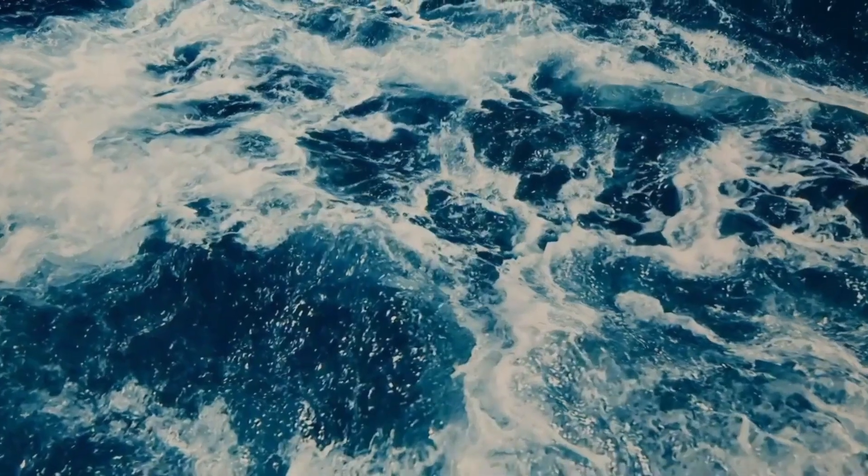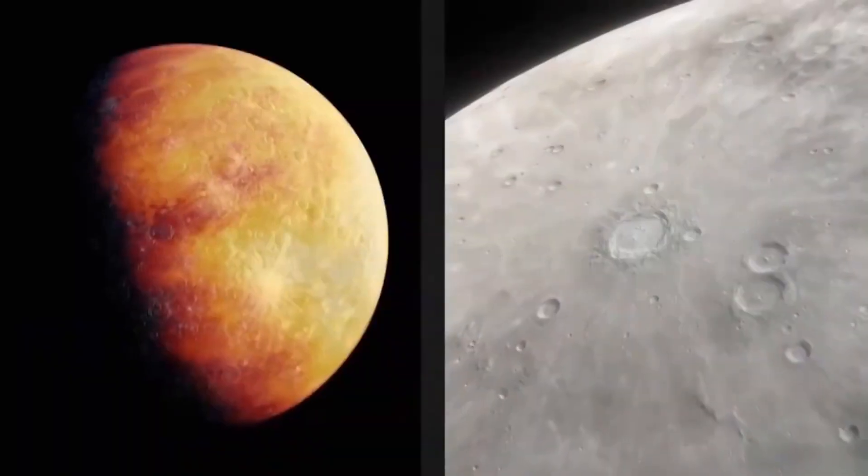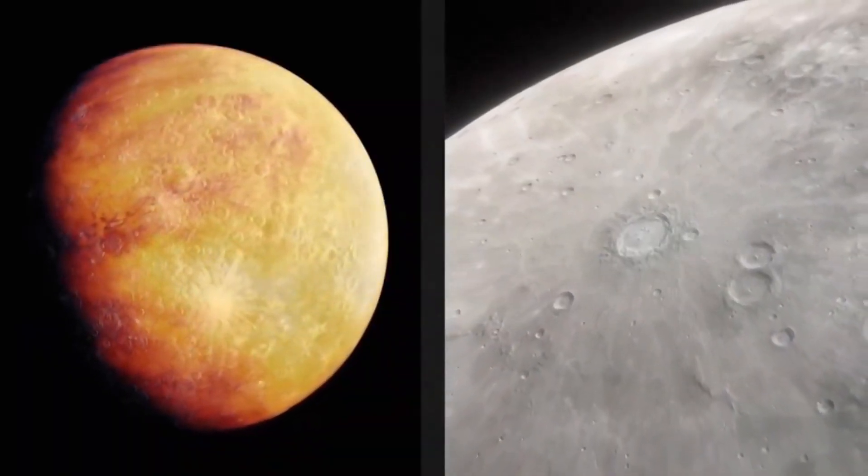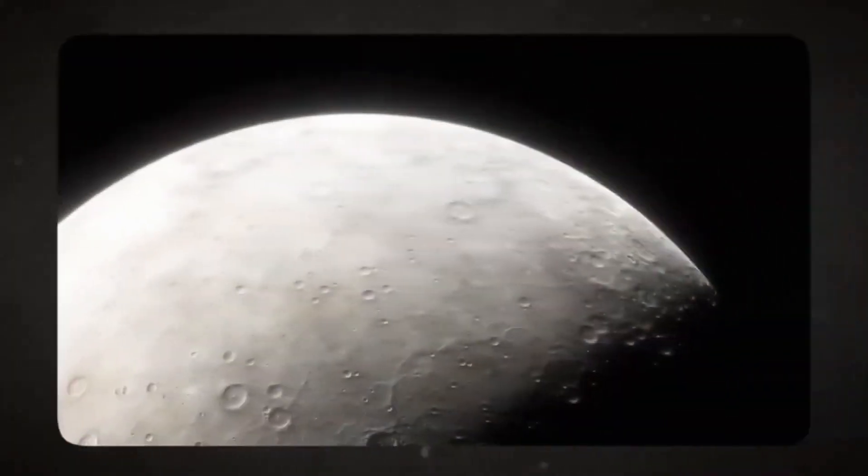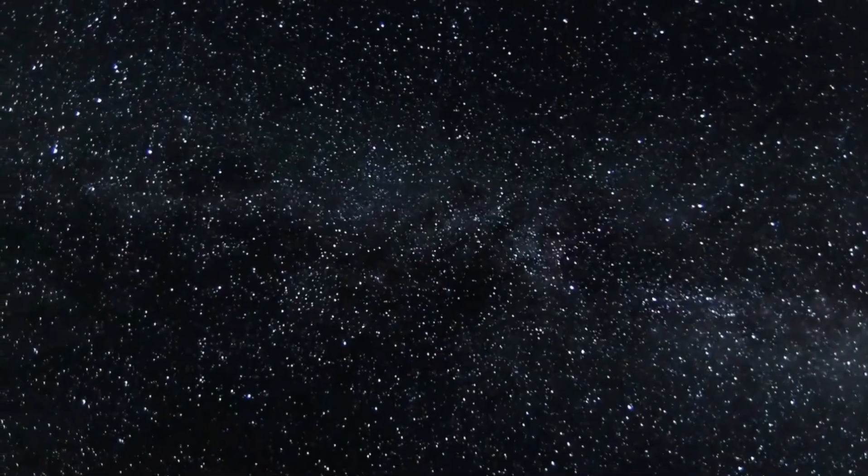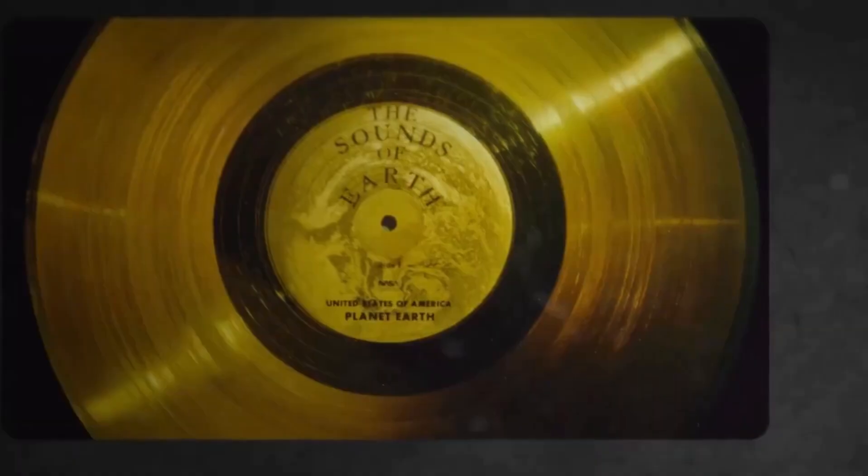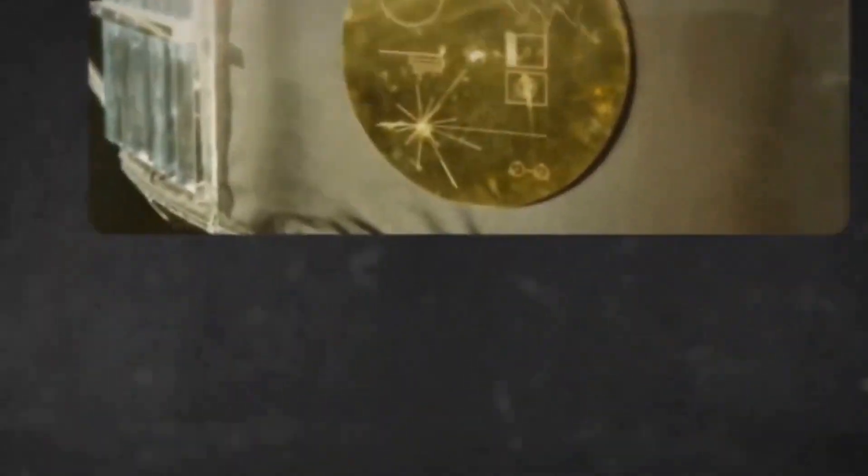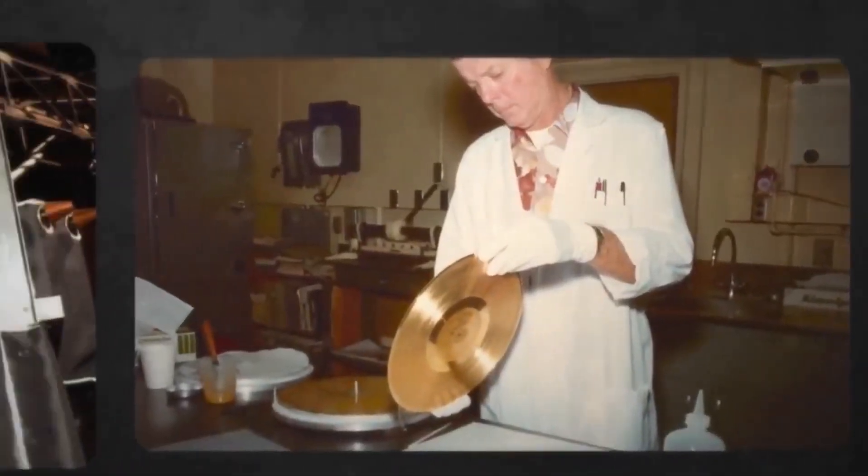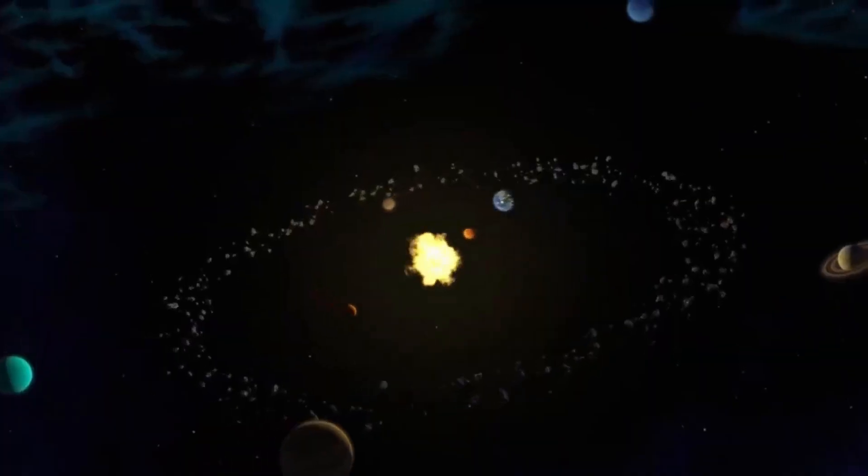Well, the discovery of Proxima b in 2016 was a remarkable achievement. Astronomers used a high precision instrument called the High Accuracy Radial Velocity Planet Searcher, HARPS, to detect the subtle gravitational tug of an exoplanet around Proxima Centauri, our nearest neighboring star. This high-precision spectrograph is designed specifically to detect exoplanets and operates at the La Silla Observatory in Chile. It has been crucial in the discovery of numerous exoplanets, including Proxima b.